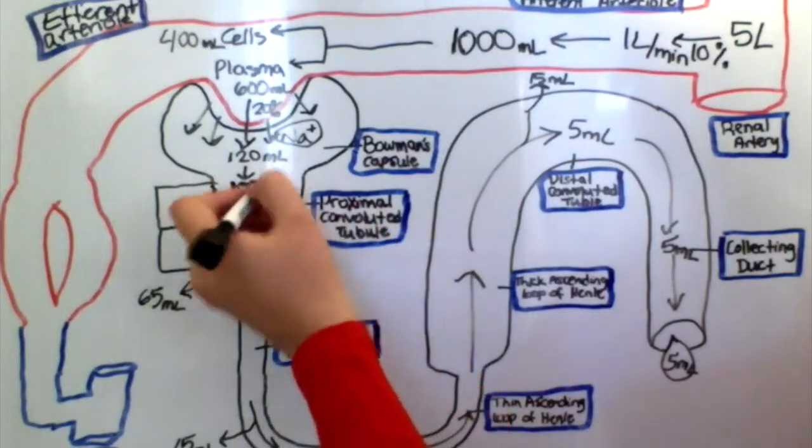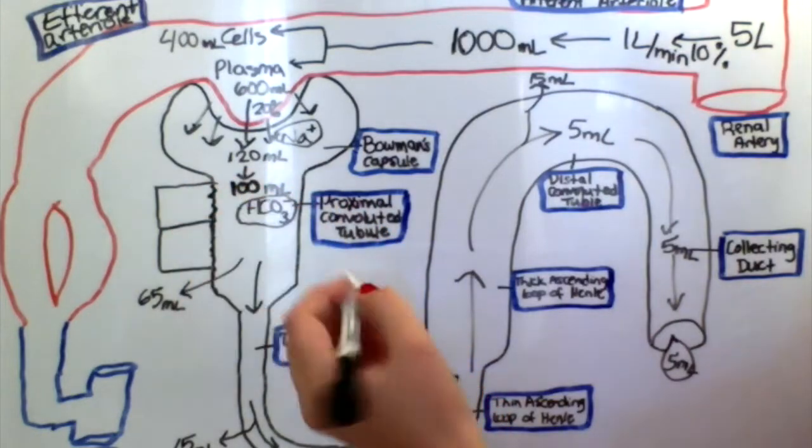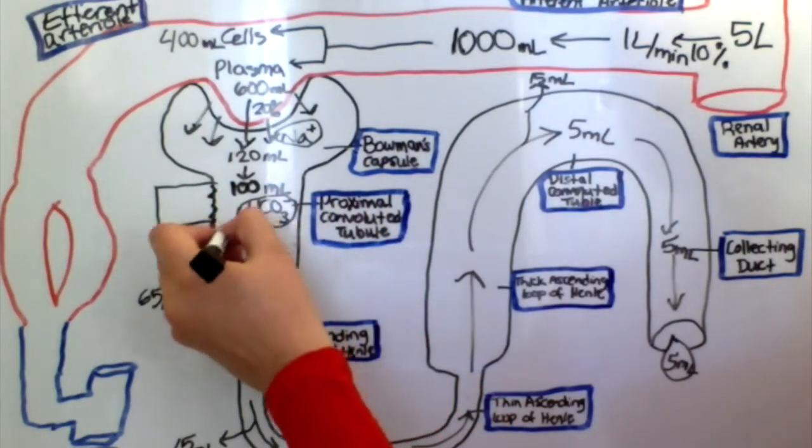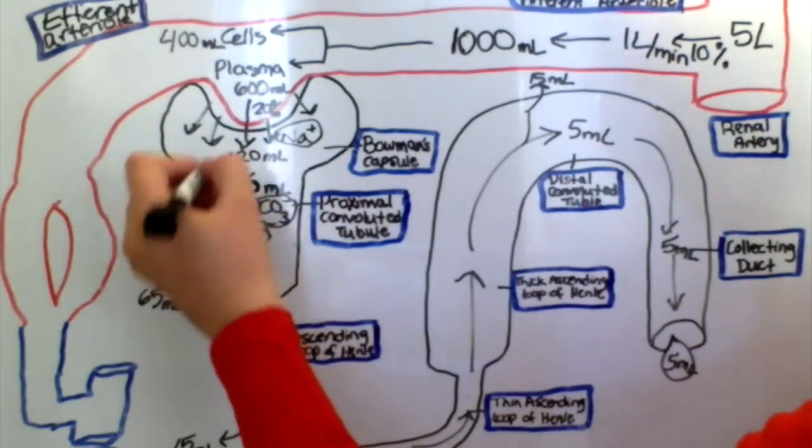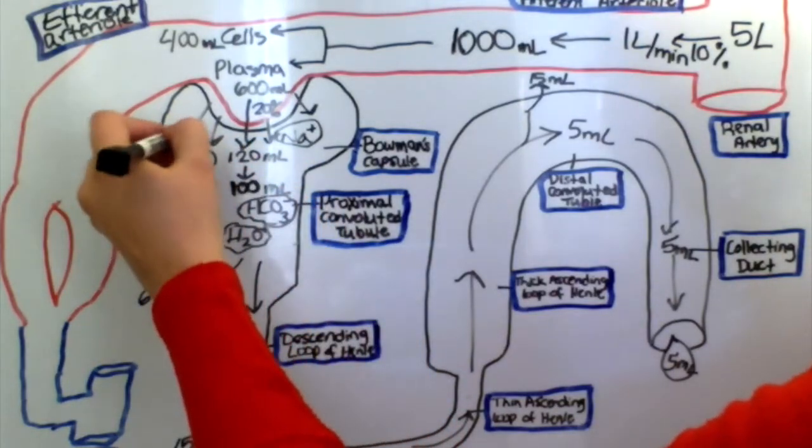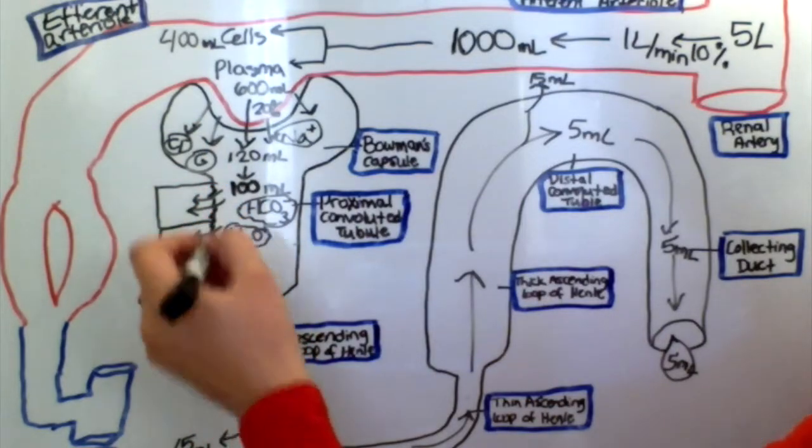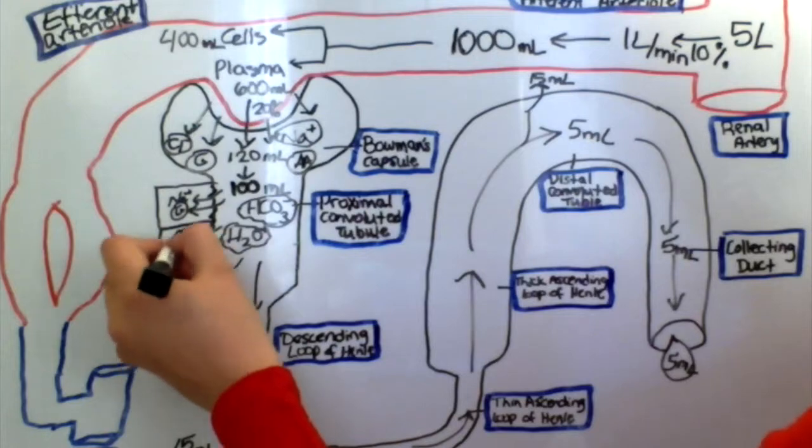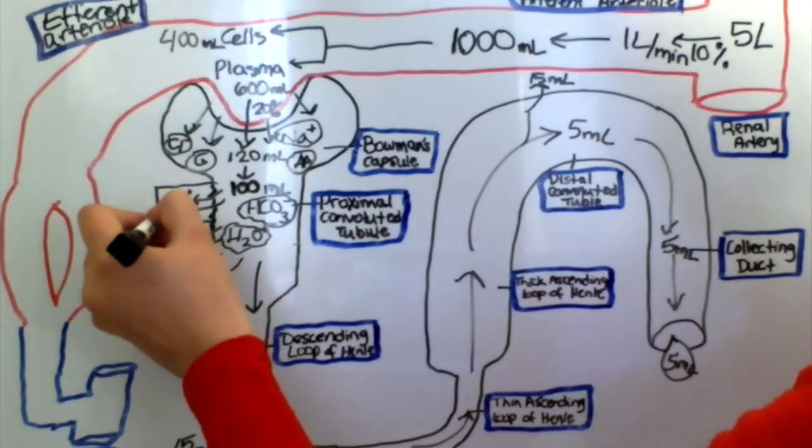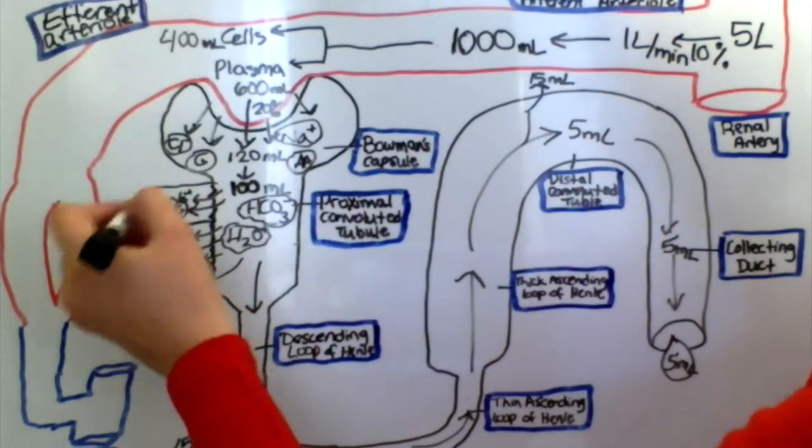There are many essential substances filtered into the Bowman's capsule that the body needs and reabsorbs through the peritubular cells in the proximal convoluted tubule. These substances are sodium, glucose, amino acids, bicarbonate, water, chlorine, and other substances.